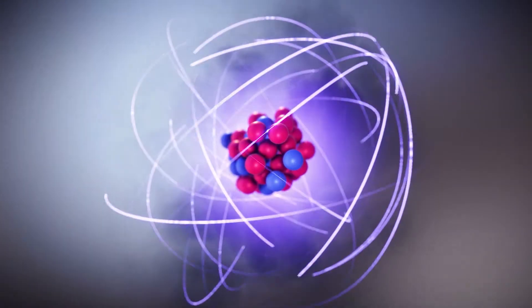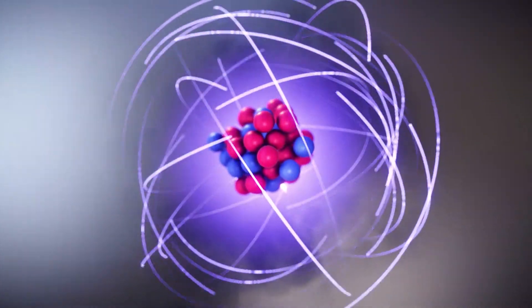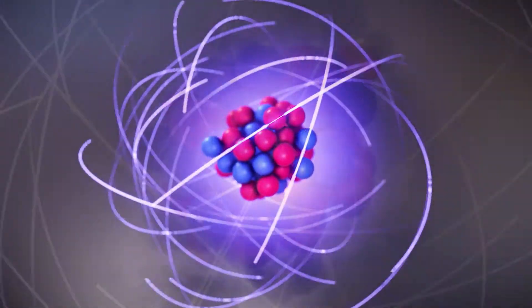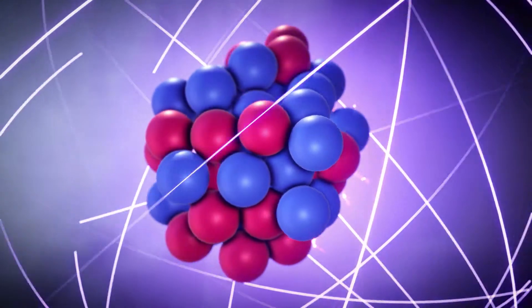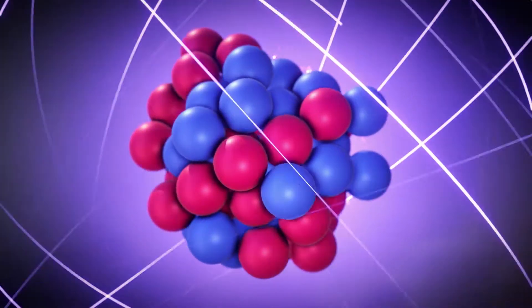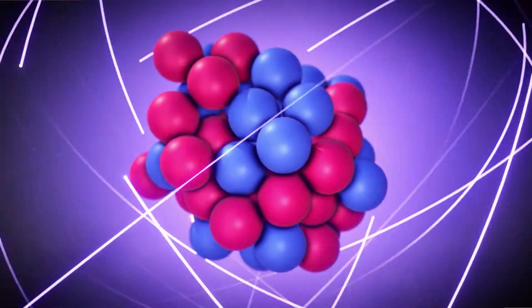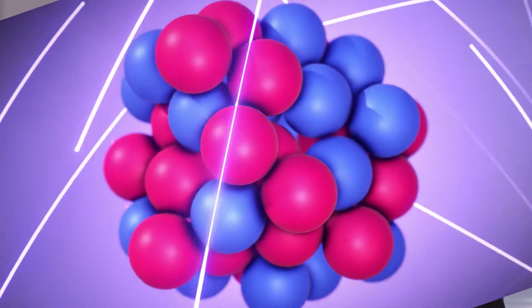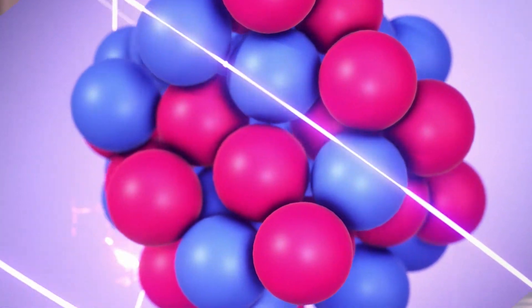The atomic nucleus consists of protons and neutrons. The combination of the number of protons and neutrons makes a rich variety of nuclei. But physicists know only one-third of them.